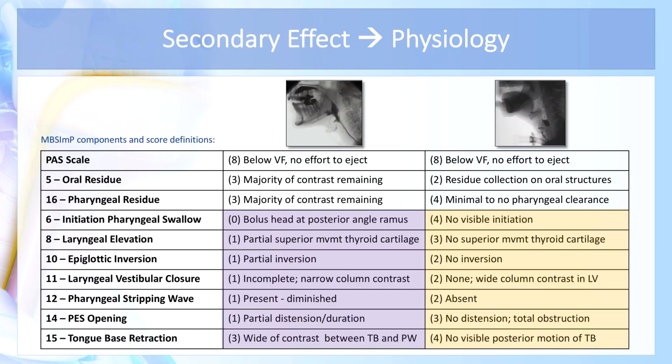However, if we look at the physiology of the patient on the left versus the patient on the right, they have very different causes of aspiration and residue. The patient on the left has a primary problem of decreased tongue base retraction. The patient on the right has a primary physiologic impairment of no visible initiation of the pharyngeal swallow — surrogate information for a significant sensory deficit for patient number two.